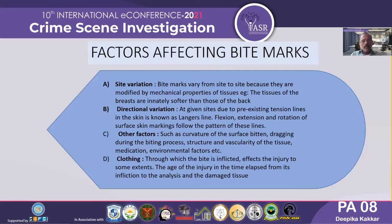There are many factors affecting bite marks. First is site variation — on which part or location the bite mark has occurred. It varies from person to person and also varies with the mechanical properties of tissues. For example, breast tissue is considerably softer than tissue of other body parts such as the back. Next is directional variation: at any given site, due to pre-existing tension lines in the skin known as Langer lines, there can be flexion, extension, and rotation of the surface, and markings follow the pattern of these lines.